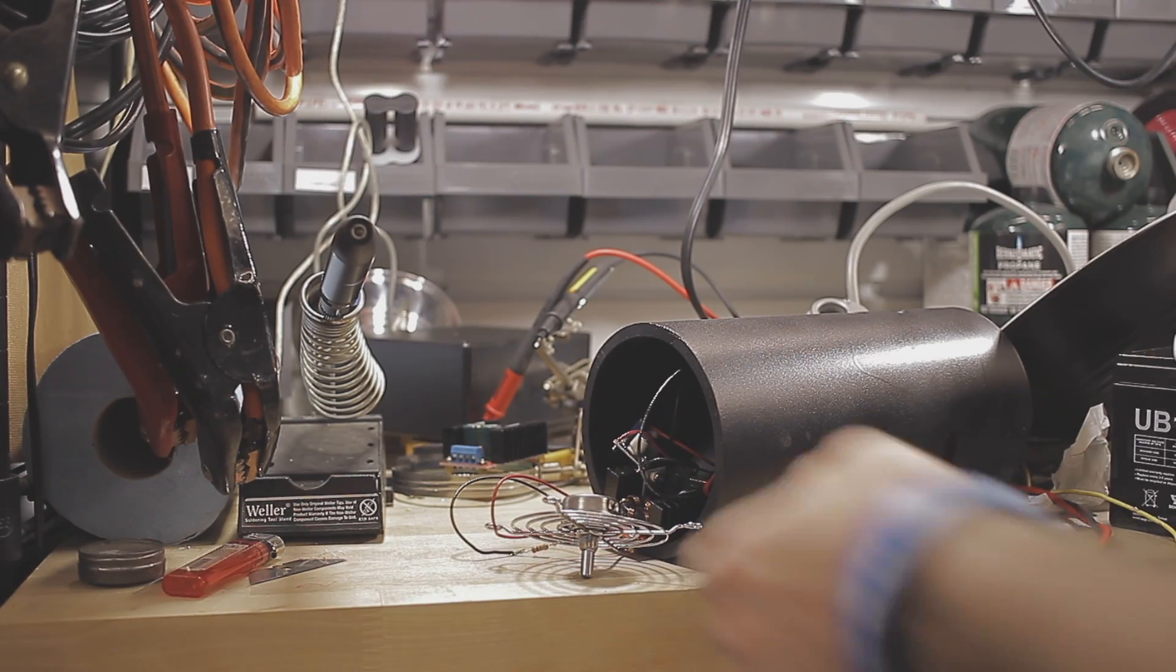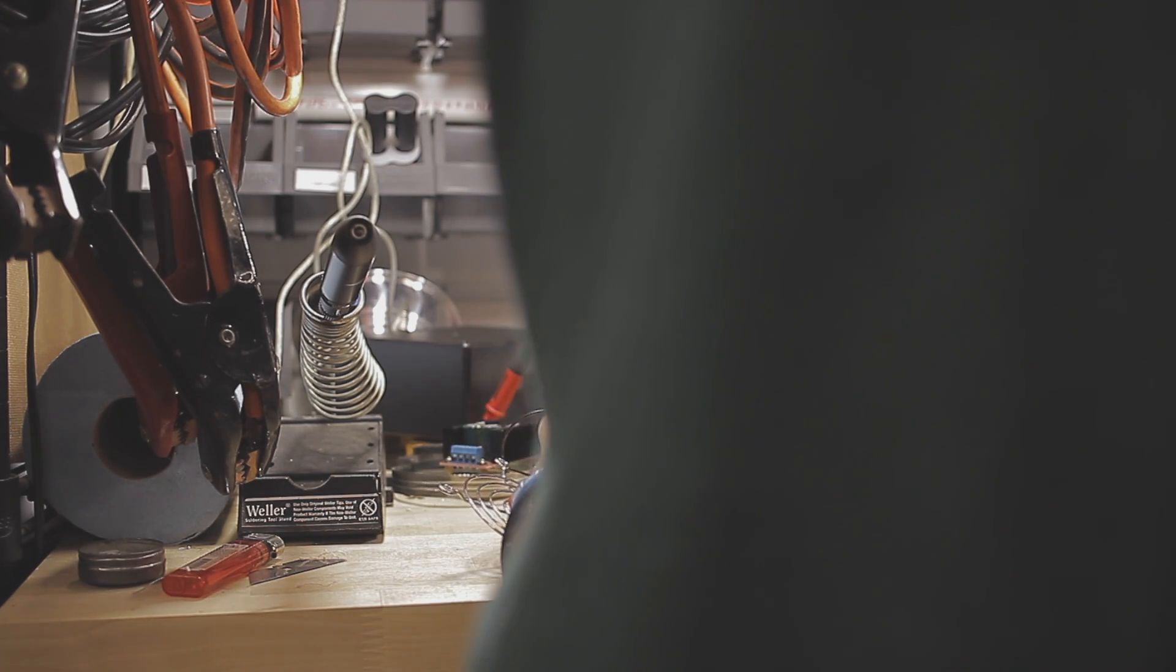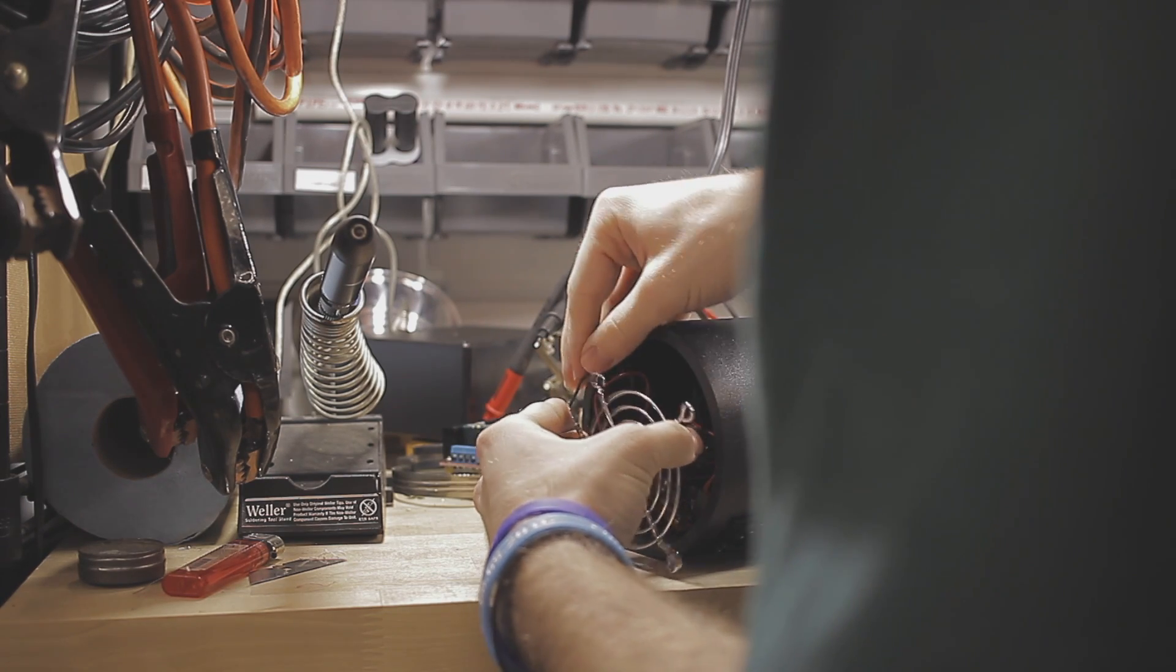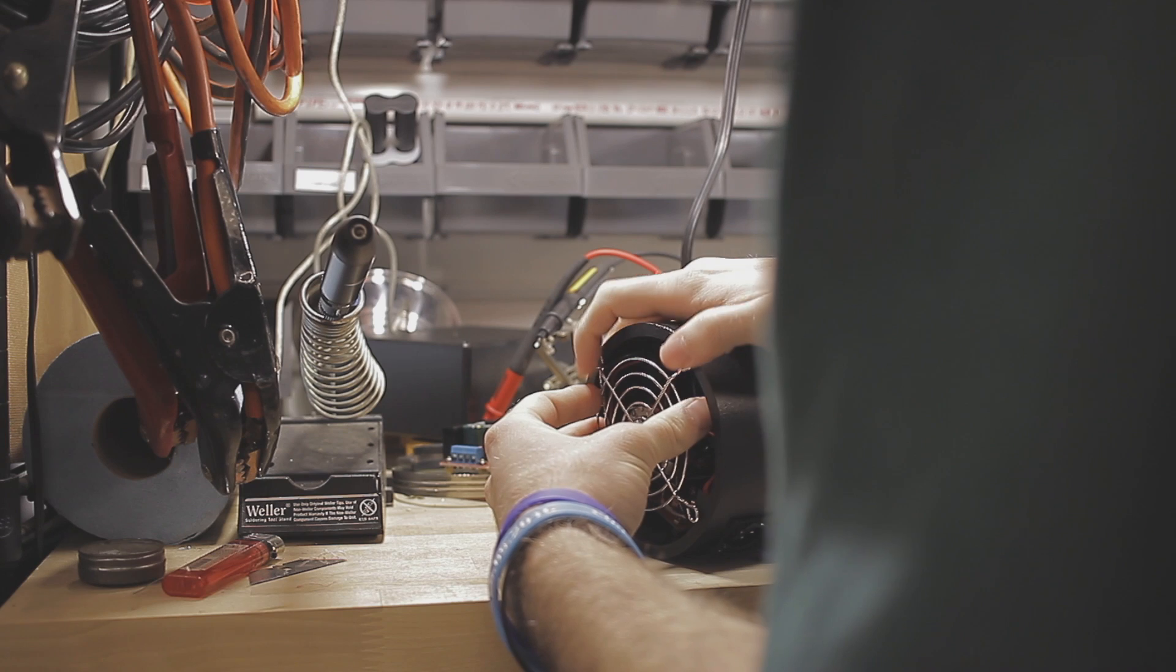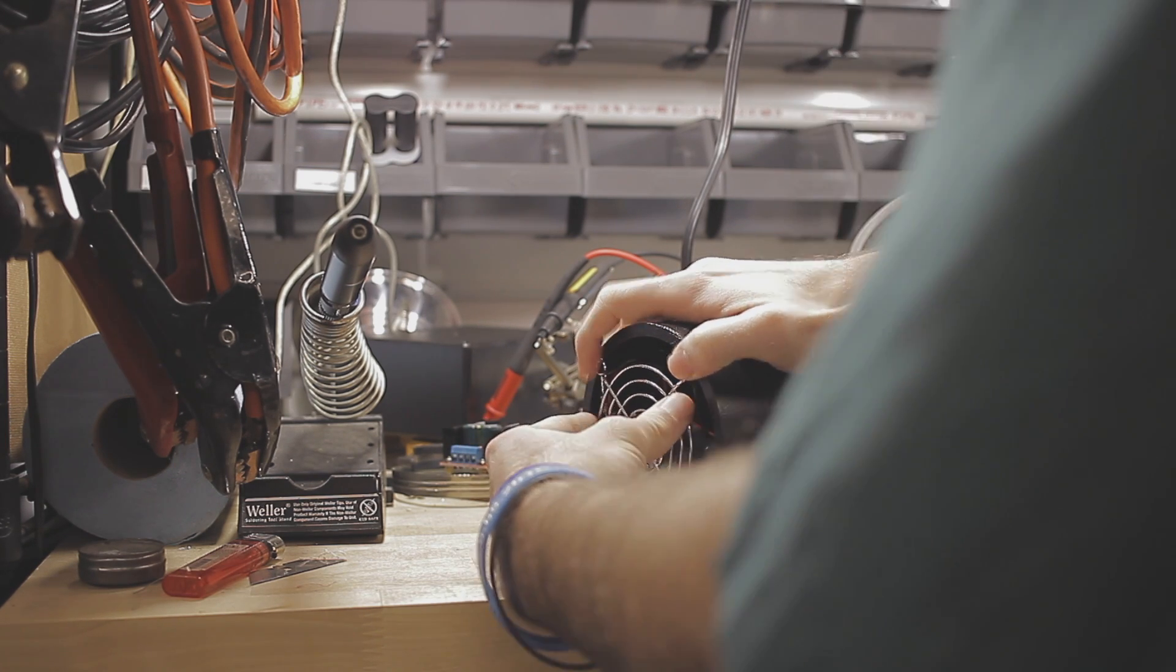Once the XLR port is installed in the PVC pipe, use hot glue, super glue, or epoxy to secure the voltage booster and the voltage regulator to the inside of the PVC pipe. This way, the voltage booster and voltage regulator aren't bouncing around and potentially short-circuiting or damaging anything.